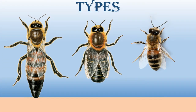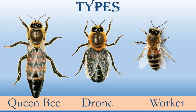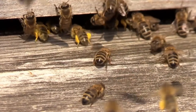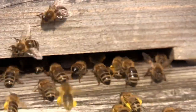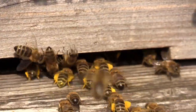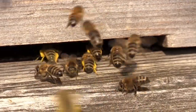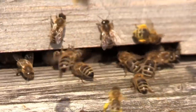The three types of honeybees are the queen bee, drone bee, and worker bee. Each organizes the colony in the hive by performing specific work determined by their gender and age.